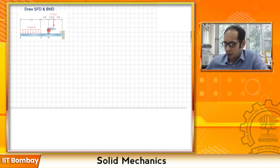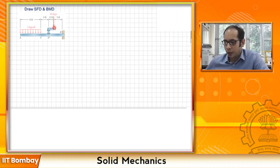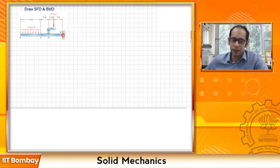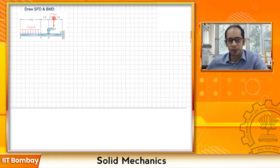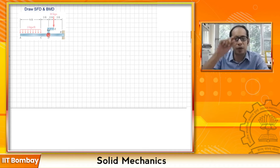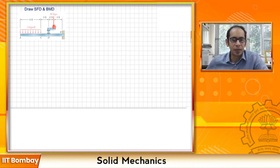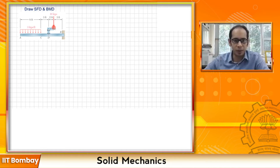Because of this projection, a load of 10 kilo pounds (10 kips) is applied at the end E. This load is going to cause a turning effect on the beam. We can write an equivalent system by shifting the 10 kip load from E to D, and in addition we must apply a moment, because the projection causes a turning effect on the beam overall.